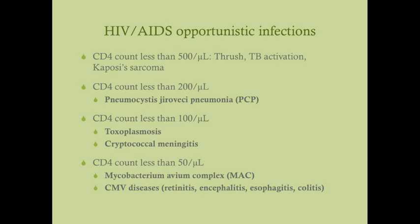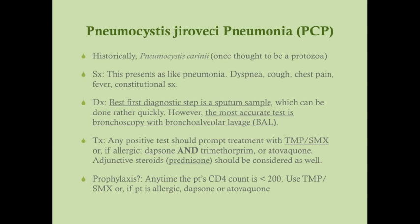Pneumocystis jirovecii pneumonia — previously called Pneumocystis carinii, which is where the abbreviation PCP comes from. This organism was once thought to be a protozoa due to its amoeboid-like appearance, but it is truly a yeast-like fungus. It is human-specific and cannot be cultured ex vivo, which makes detection challenging.